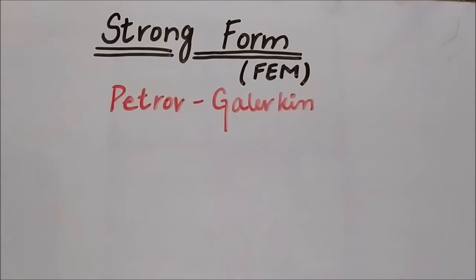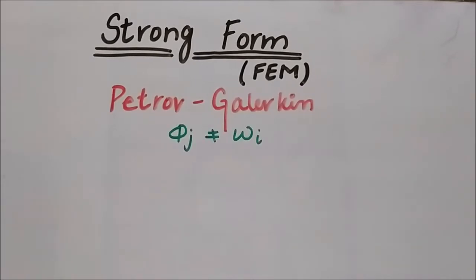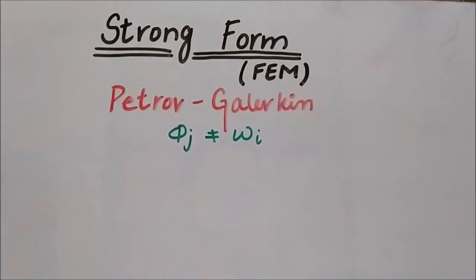Today our main target is the Petrov-Galerkin method. It is a type of the weighted residual method, and the main assumption of this method is that the shape functions are not equal to the weight function. This is the main assumption of the strong form Petrov-Galerkin method. Let's solve an example to see how we can apply this while solving a differential equation using the strong form.